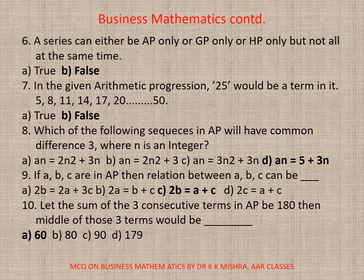Question 8. Which of the following sequences in AP will have common difference 3, where n is an integer? So if you look at these closely, you will find D to be the correct option, AN is equal to 5 plus 3n. Question 9. If A, B, C are in AP, then which relation between A, B, C can be existing? So the correct option is C, 2B is equal to A plus C.